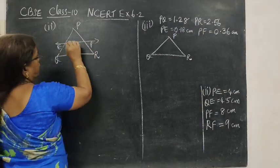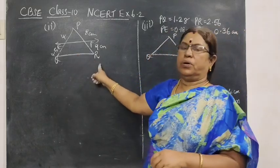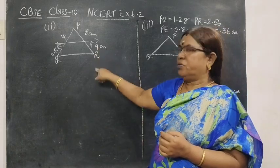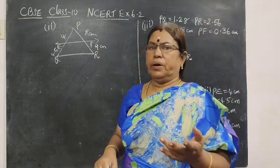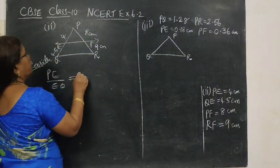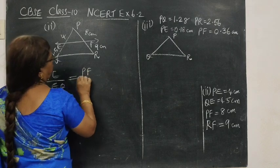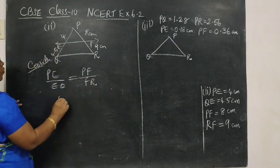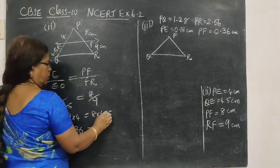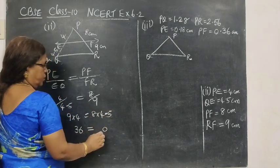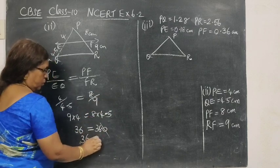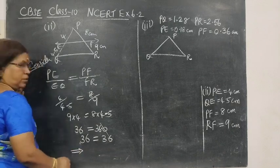PE 4 cm. Either EF parallel to QR, for this we are using converse of BPT. If the ratios are equal, then by converse of BPT they are parallel. Consider PE by EQ equal to PF by FR. 4 by 4.5, 36 equal to 8 into 4. 8, 5 are 40, balance 4. Here 36. One decimal place.